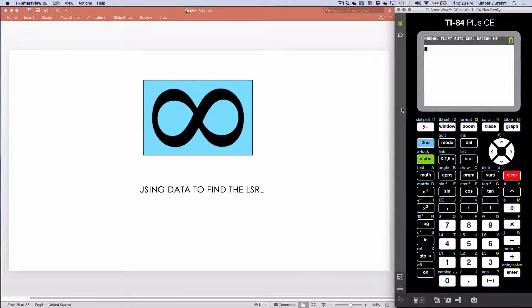We are going to first find the least squared regression line of some data using our calculator. As we're going through the lesson, I will be using the calculator. At the end of the lesson, I will show you how to do all of these things in both StatCrunch and in Excel.